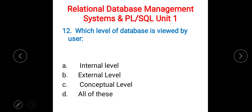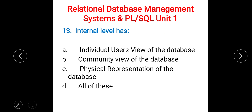Next question: which level of a database is reviewed by the user? A) internal level, B) external level, C) conceptual level, D) all of these. The right answer is B) external level. In the internal level, there is the physical representation of the database.